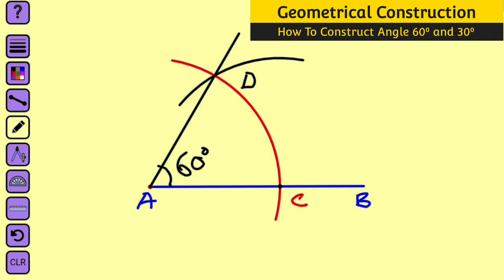Now let me show you how to construct angle 30 degrees. Remember that angle 30 degrees is just half of angle 60 degrees. Therefore you can just bisect angle 60 degrees to get 30 degrees. So let's do that.